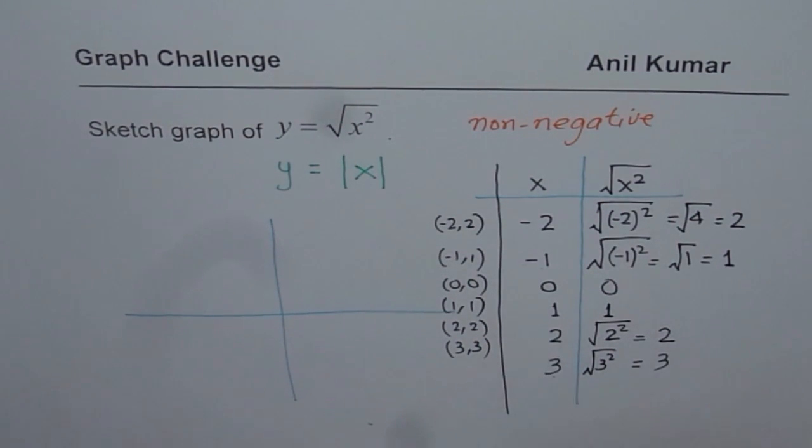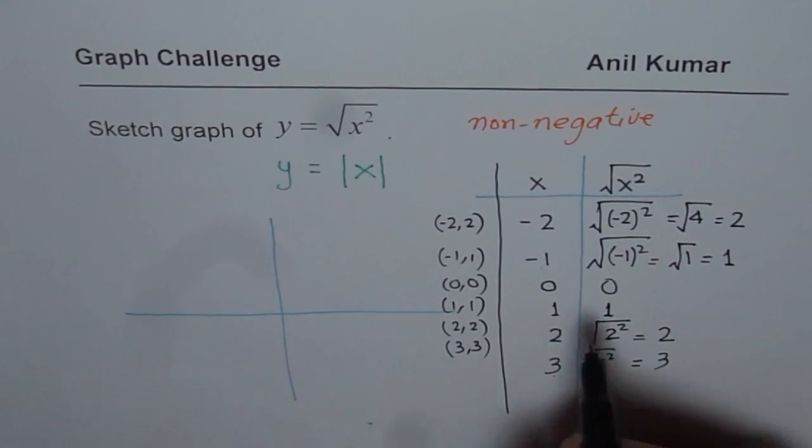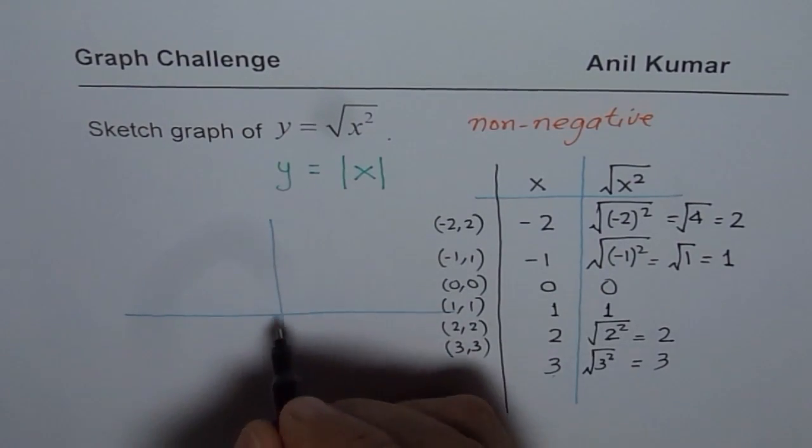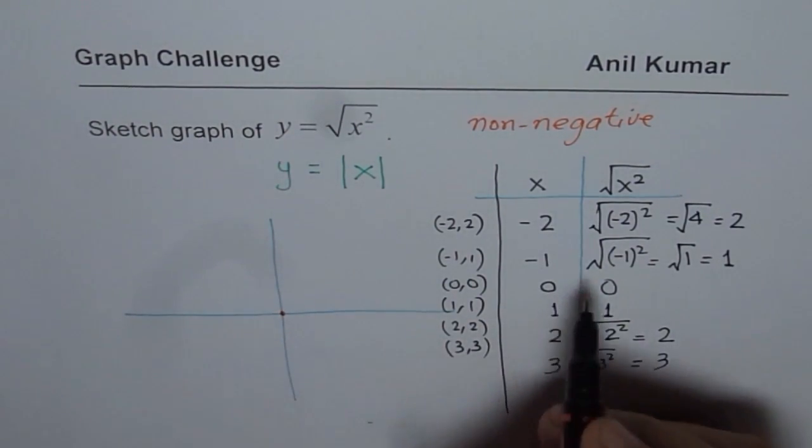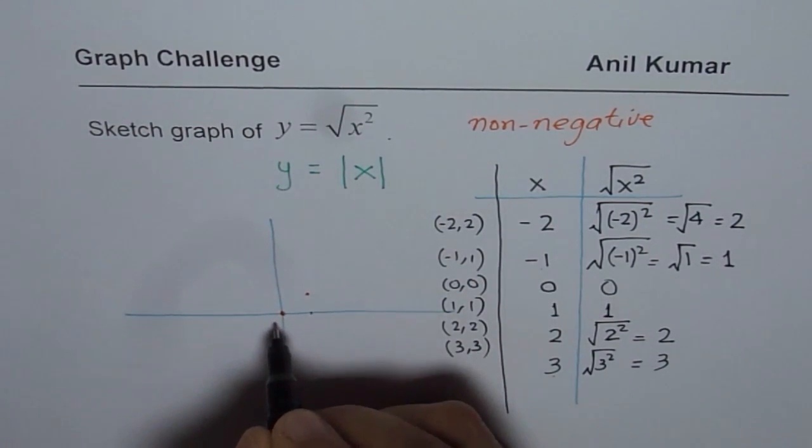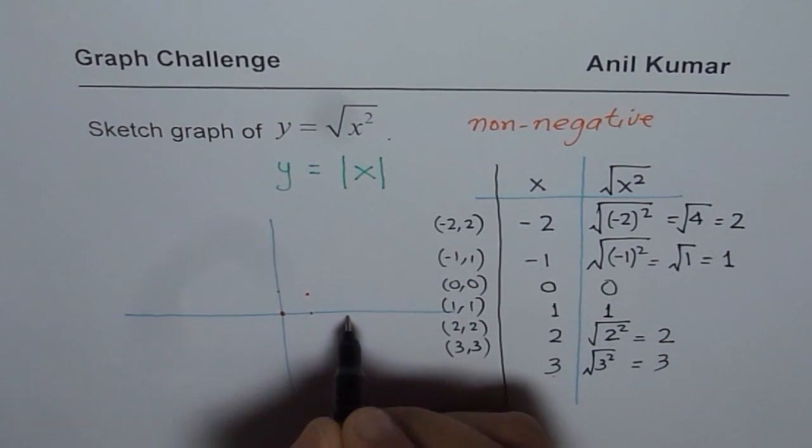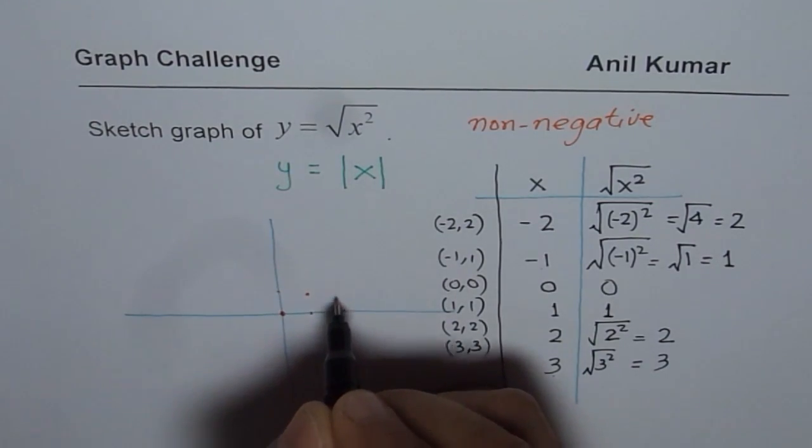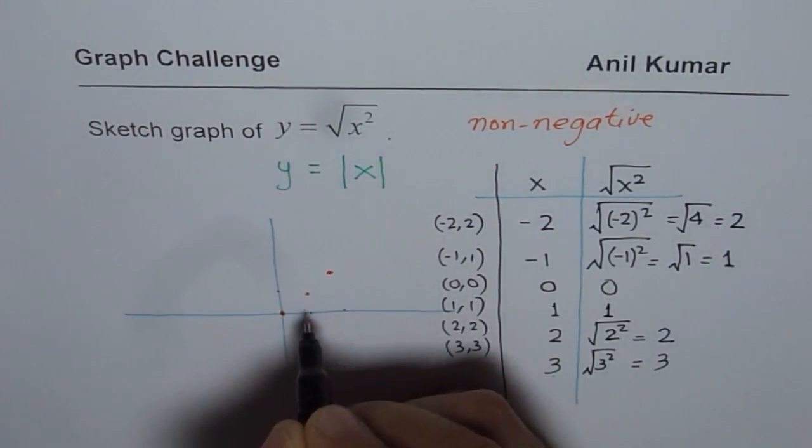Now if I plot these points, then let's begin from 0, 0. So we have 0 to 0 here. Then we have 1, 1. That means you can go 1 unit to the right and 1 unit up, right? So that is 1, 1. Then 2, 2. So second unit. And then like this, correct? 2, 2.